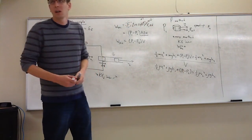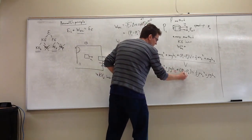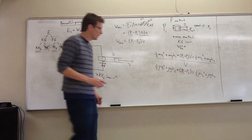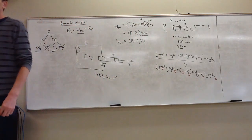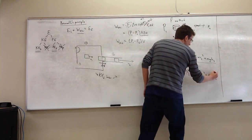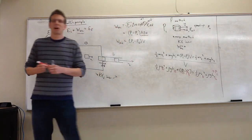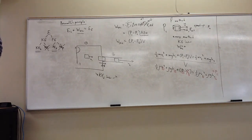One more thing and we're done. This is the speed in section one, this is the height in section one, this is the pressure in section one; here's the speed, height, and pressure in section two. Let me take P2 and put it on the left side so I have all the section-one stuff on the left and all the section-two stuff on the right. Anyone notice anything? They're the same. We've found some weird, bizarre conserved quantity for a fluid.